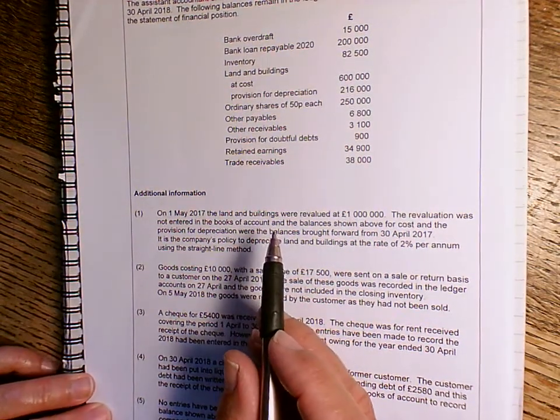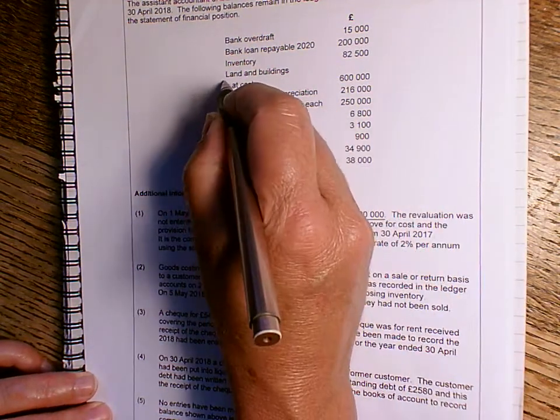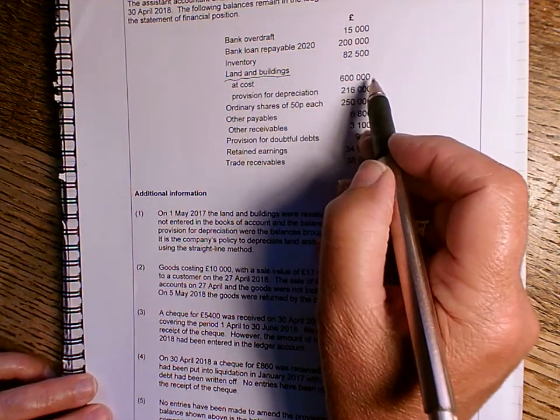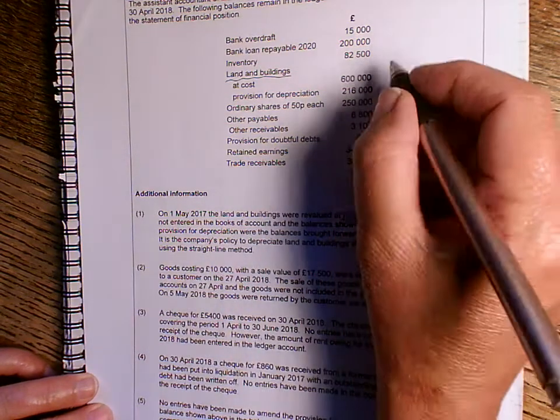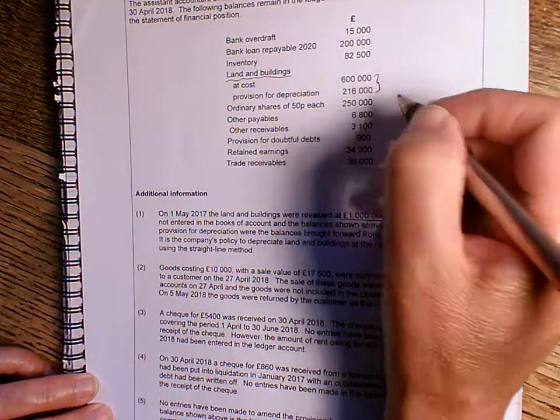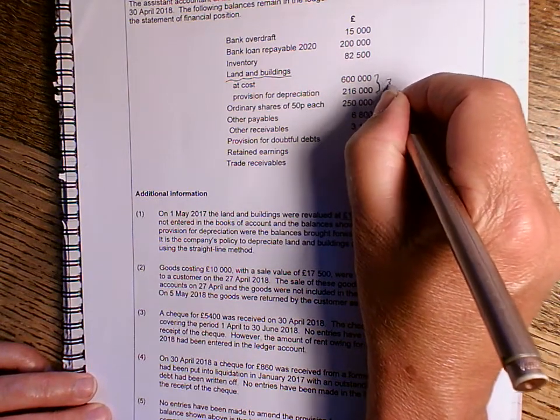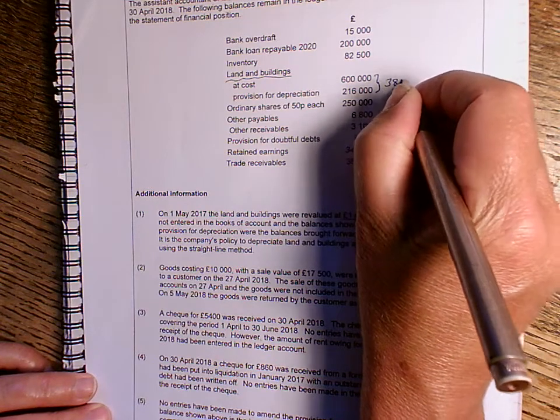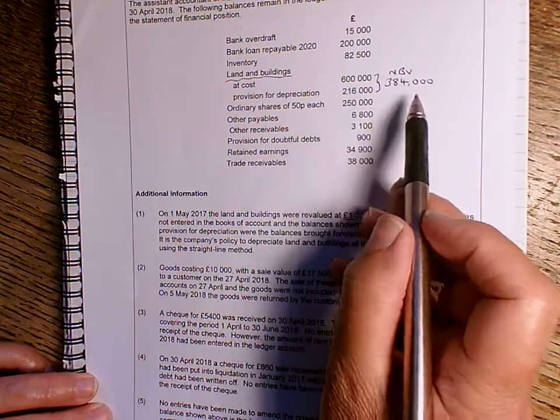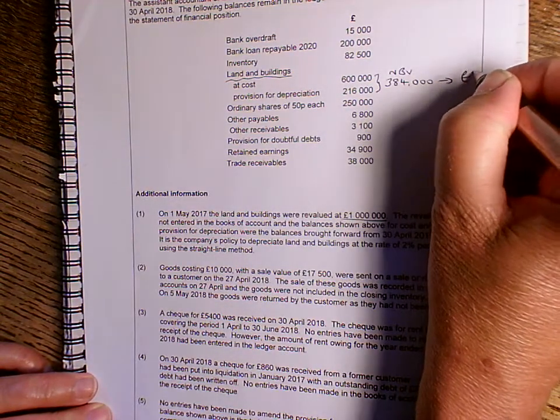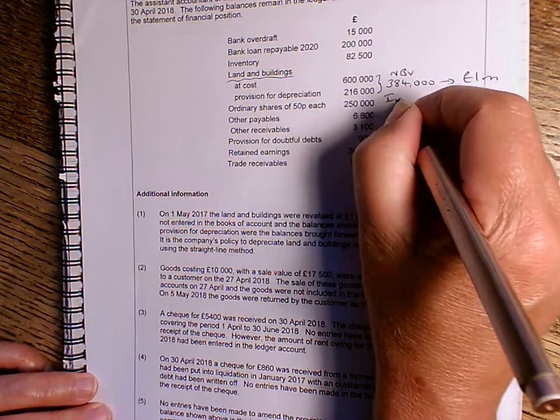So the first thing we've got to deal with is that the land and buildings were revalued at £1 million. Now if we look up here, you can see the original figures for the land and buildings. The cost was £600,000 and the provision for depreciation was £216,000. Now if we take one away from the other, we are left with £384,000. So that's the current net book value. Now if we want to then increase that to £1 million, we've got a sizable increase in value, haven't we?